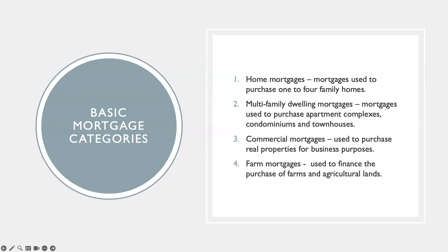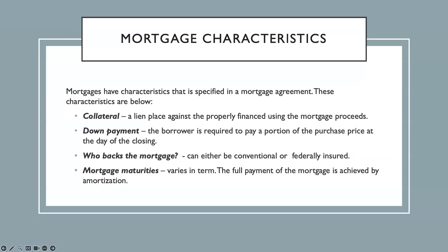Now that we know the four basic mortgage categories, let's understand the basic characteristics of a mortgage. Mortgages have characteristics that are specified in a mortgage agreement. Some of these characteristics are a collateral, a down payment, a mortgage backing, and mortgage maturities. Let's get through each of these one by one.